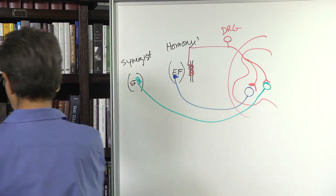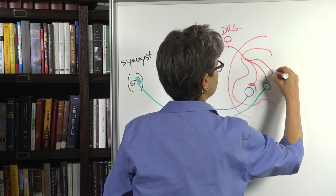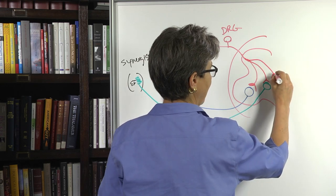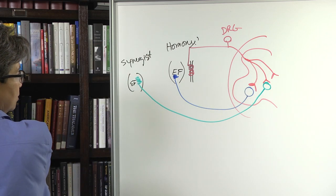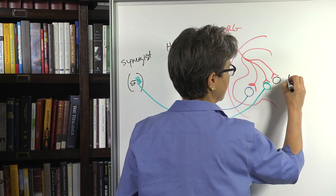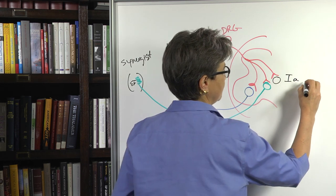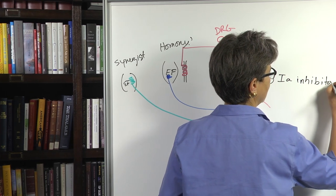The way that occurs is that this message from the 1A afferent is also going to go to an interneuron. And this interneuron is a very famous interneuron. It's called the 1A inhibitory interneuron.